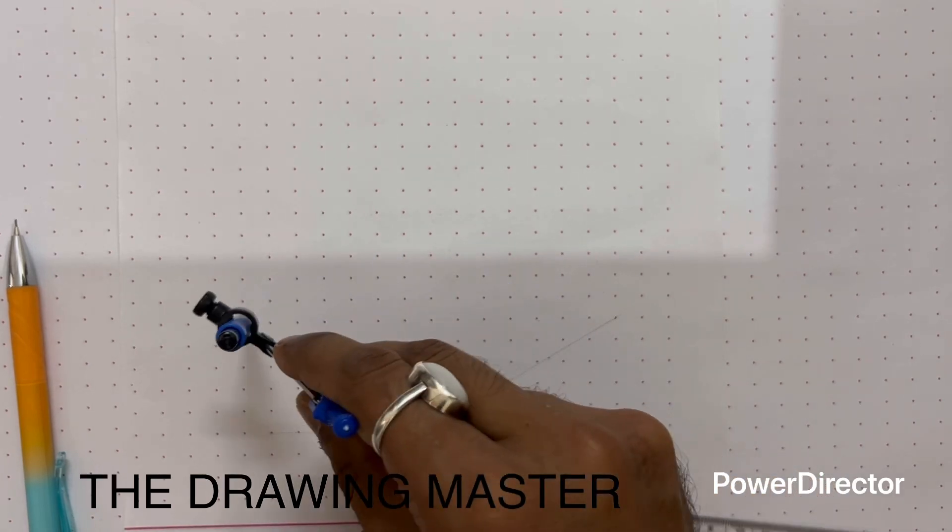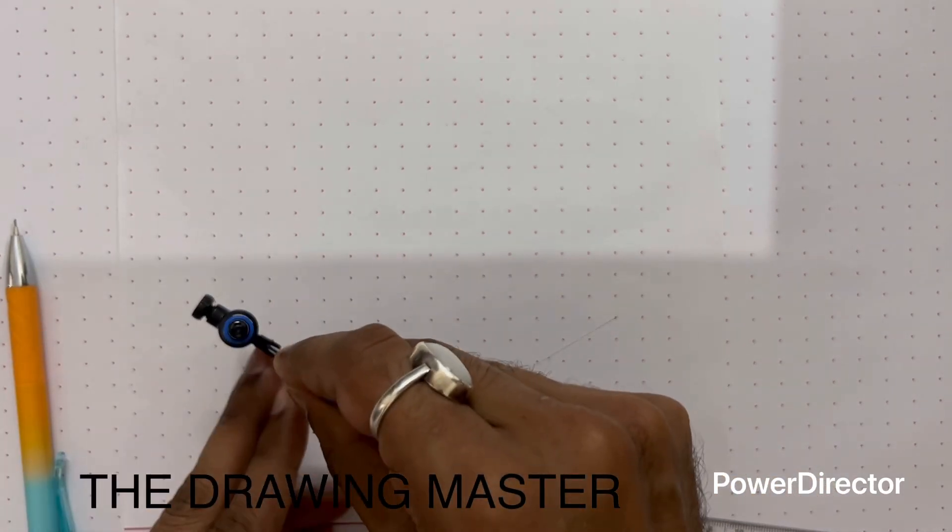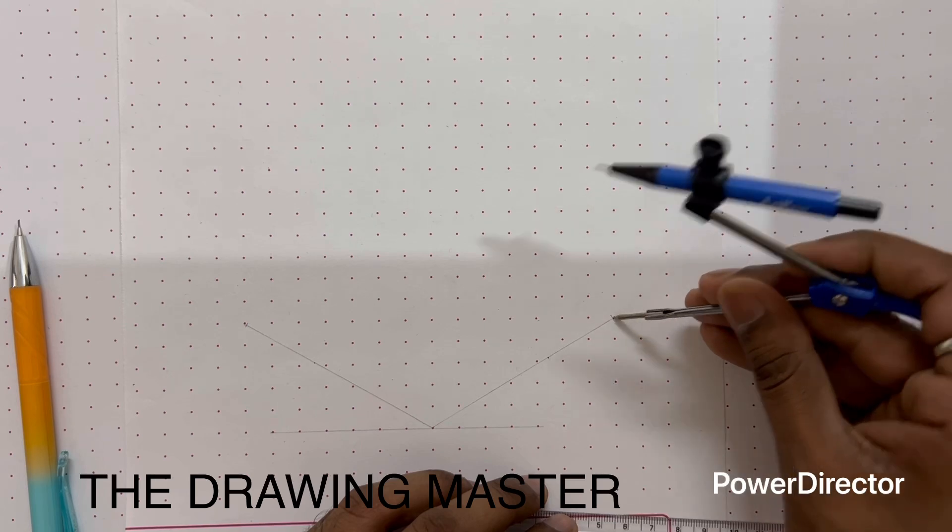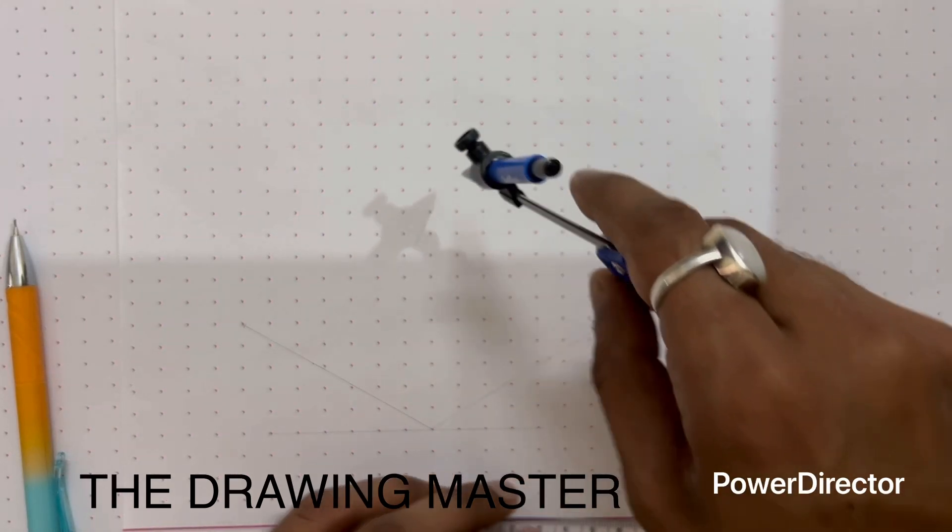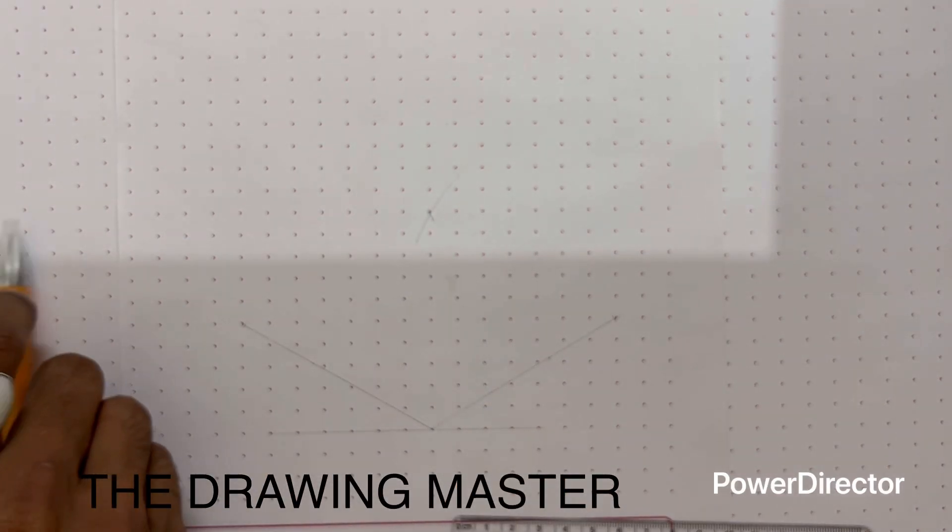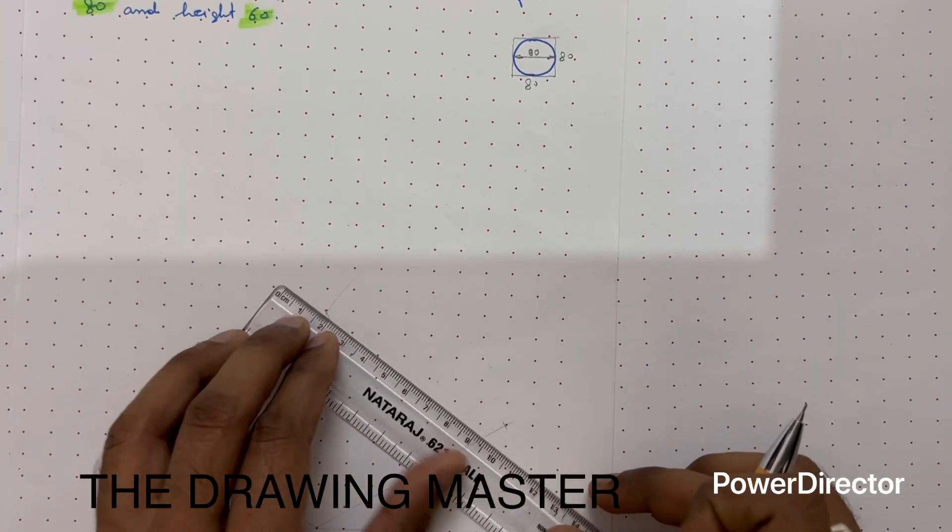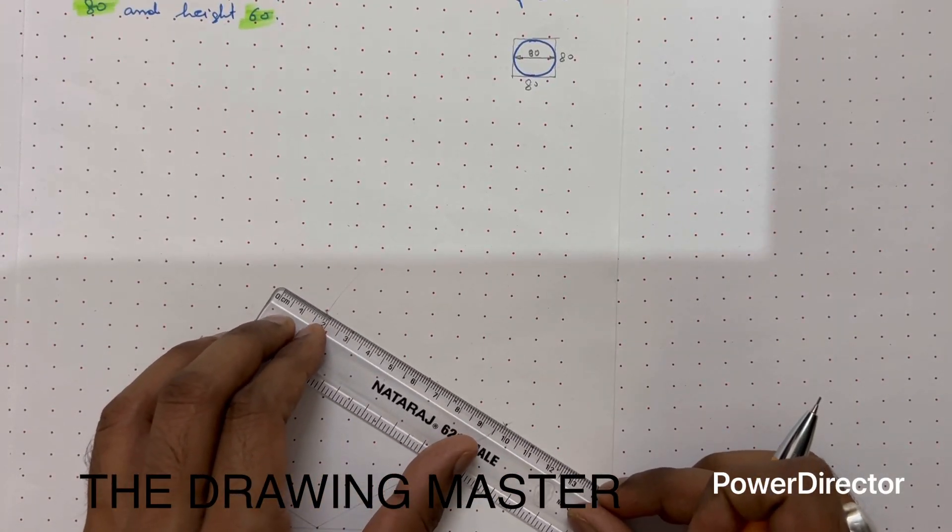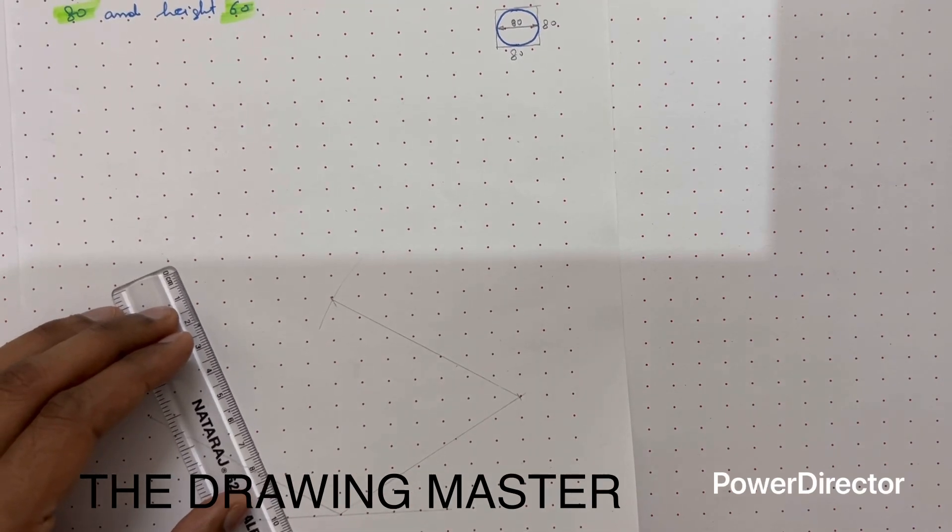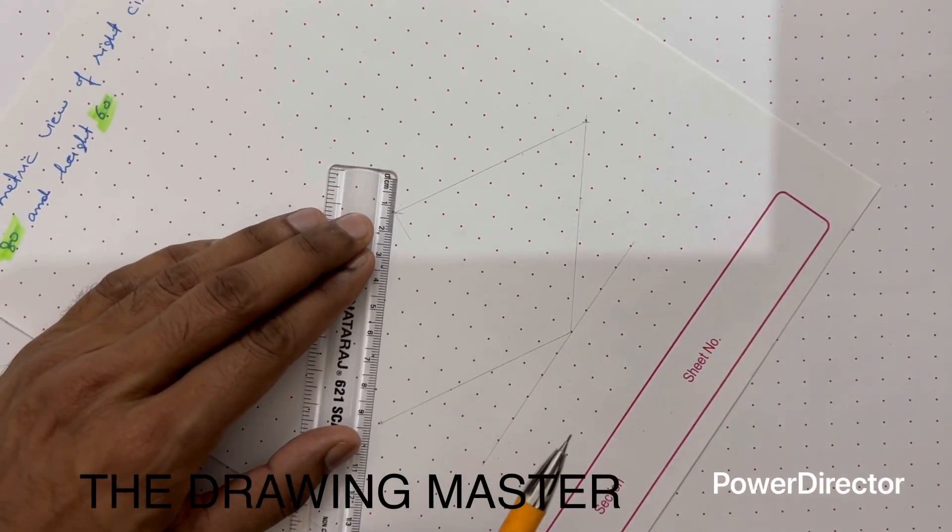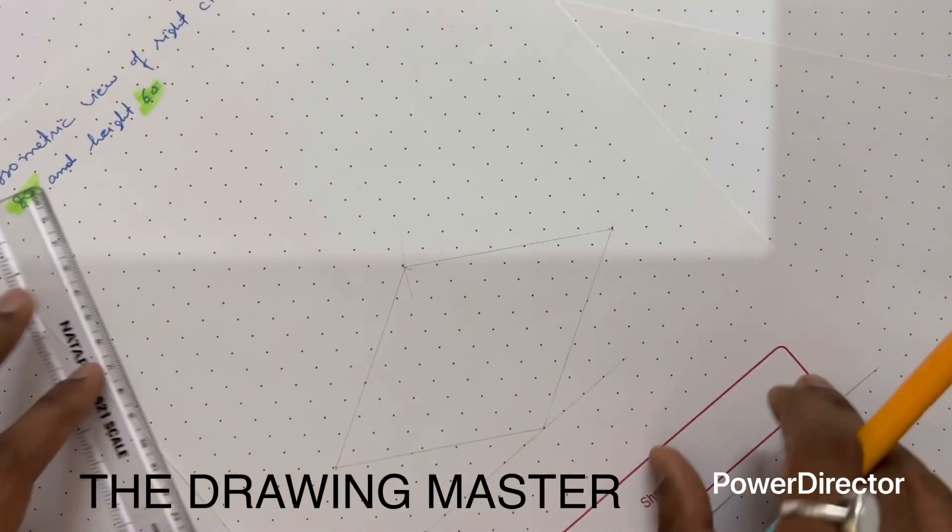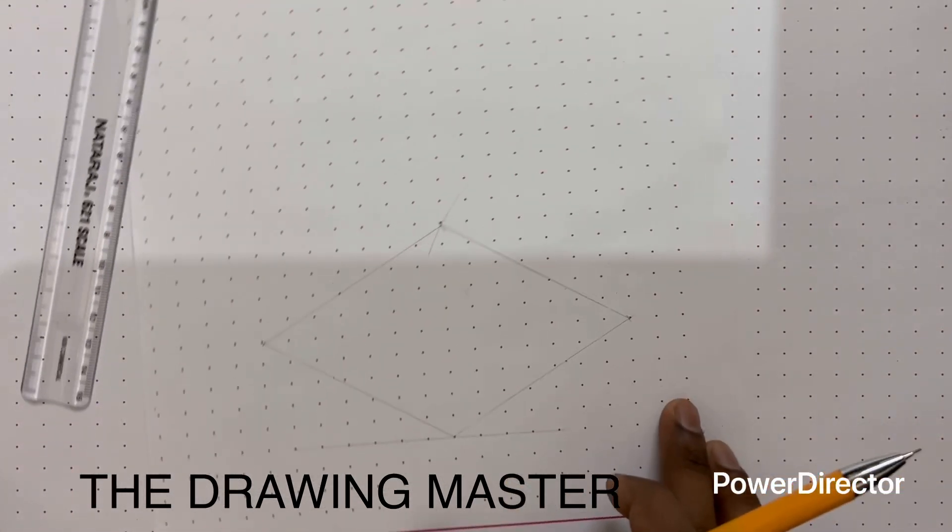Now take a compass of 80mm. Take 80 arc from right side and take 80 arc on left side. You can draw it side by side and note the time that you are taking to draw this. So now this is the isometric view of a square of 80 by 80.